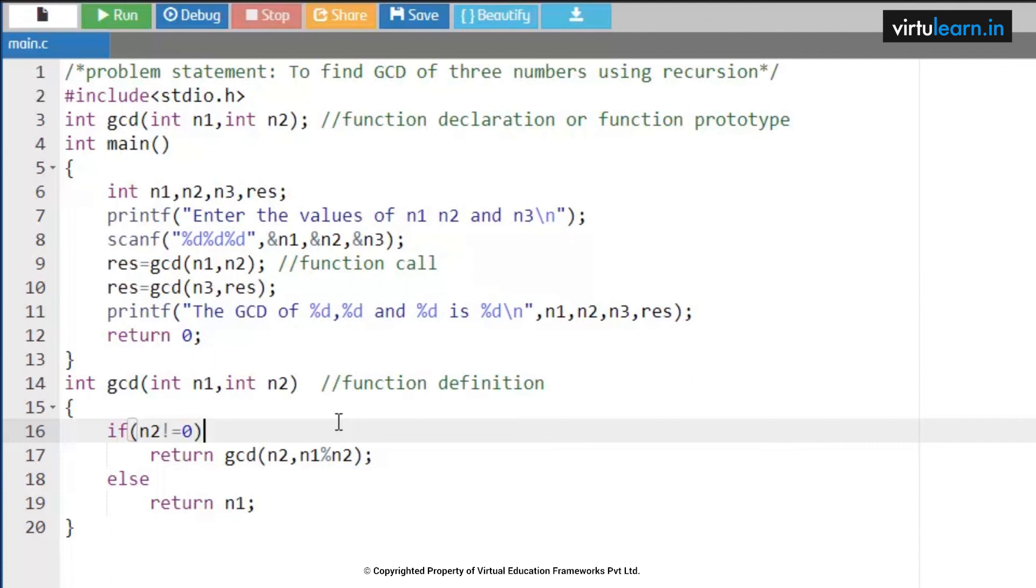Now check the condition: what is n2 value? 0 not equal to 0, condition is false, then we need to return n1. So what is the n1 value? 10. This 10 is written back to the function, so the value of 10, that is the GCD of 10, 20, and 30 is 10. This is how the result has been executed.